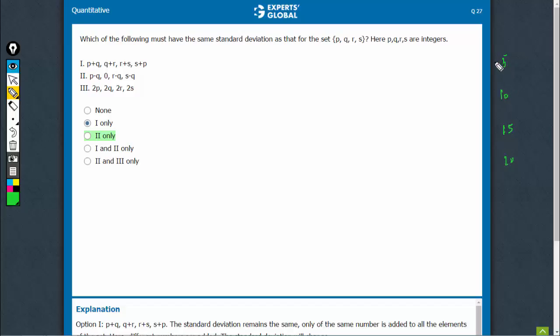So, even if this becomes 105, 110, 115, 120, the standard deviation of the new set will also remain the same because mutually the difference between these terms remains the same.